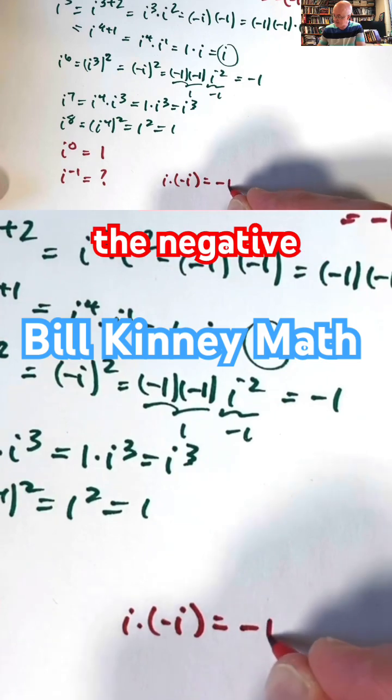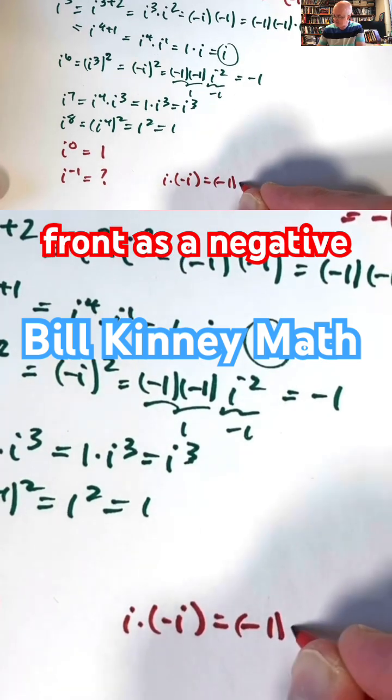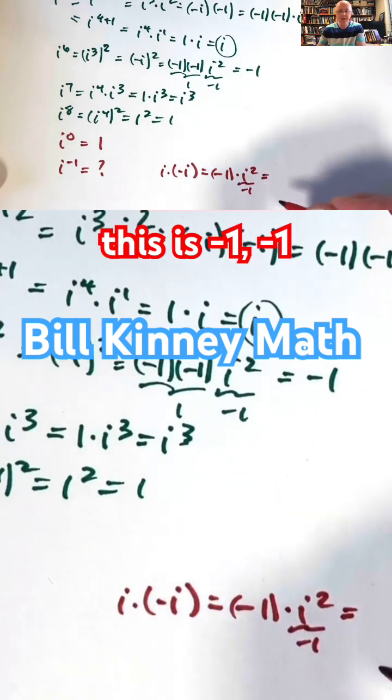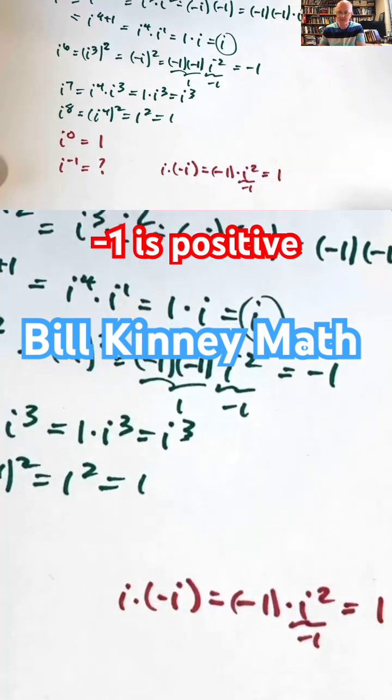We can factor the negative sign out in front as a negative 1, and write this as negative 1 times i squared. This is negative 1. Negative 1 times negative 1 is positive 1.